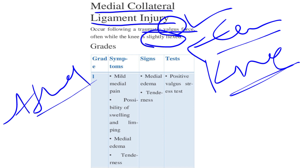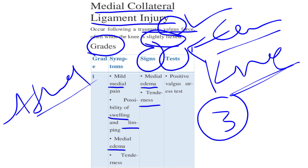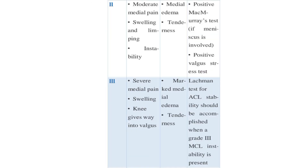MCL injury most commonly occurs in athletes. According to its grades, it has three grades. In Grade 1, the symptoms are mild medial pain, possibility of swelling, medial edema, and tenderness. The signs include edema and tenderness, and the test used is the positive valgus stress test.